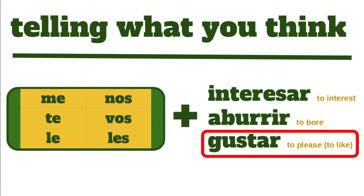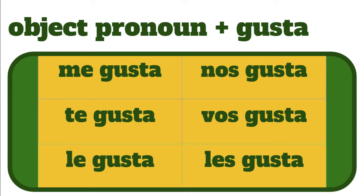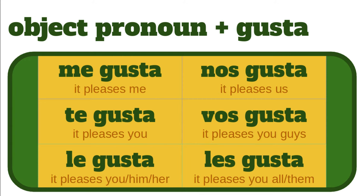The third verb works the same way. The third verb is gustar, which means to please. It's also the verb we use when we want to say what we like. Me gusta, te gusta, le gusta, nos gusta, vos gusta, and les gusta. Me gusta means it pleases me. Te gusta — it pleases you. Le gusta — it pleases you or him or her. Nos gusta — it pleases us. Vos gusta — it pleases you guys. Les gusta — it pleases all of you, or it pleases them.